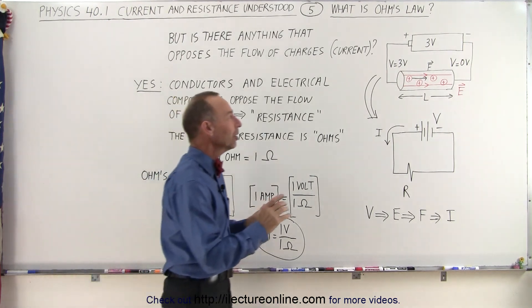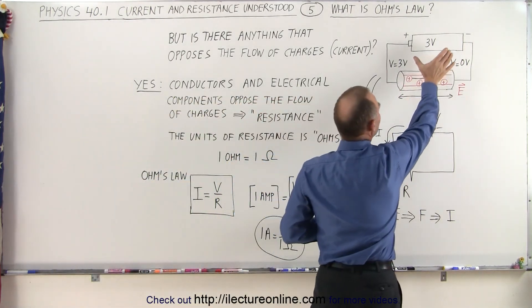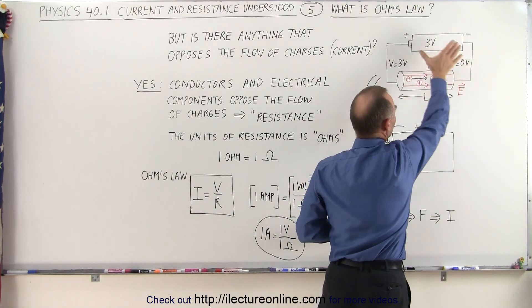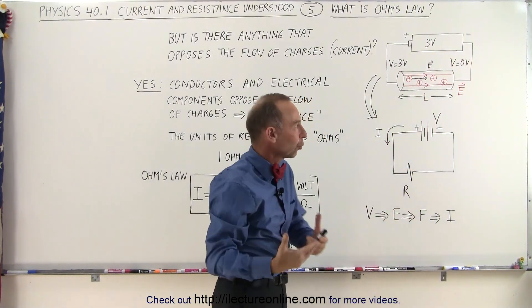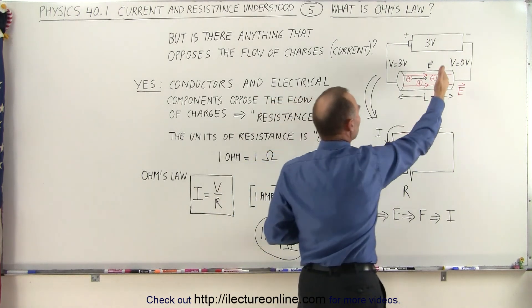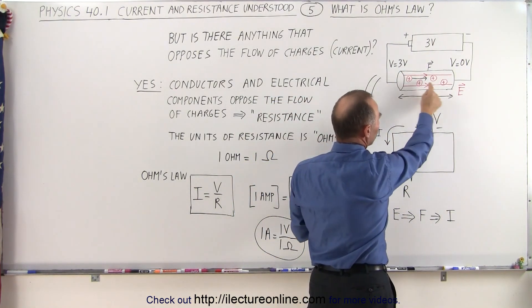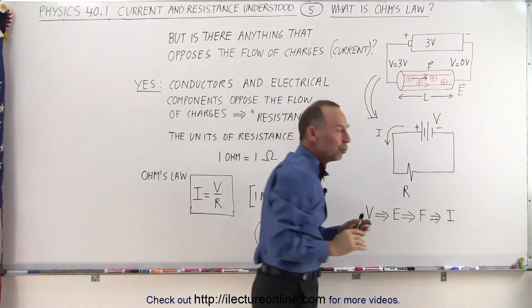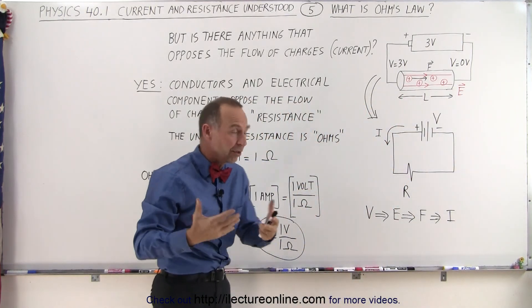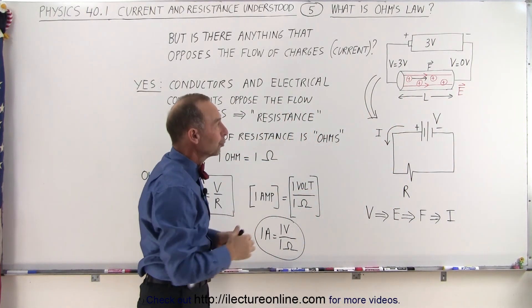In the previous video we saw that if you produce a potential difference across the circuit because of a battery or voltage source, we produce an electric field which causes forces to exist on the charges, which causes the charges to move, and those moving charges constitute a current through the circuit.